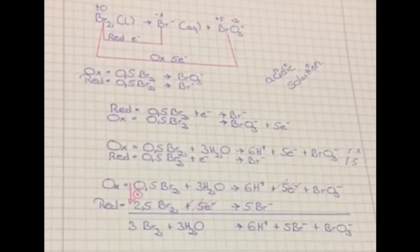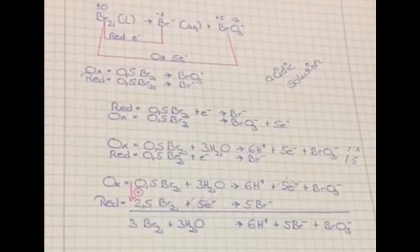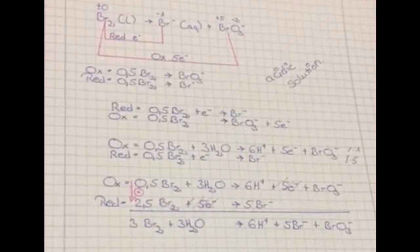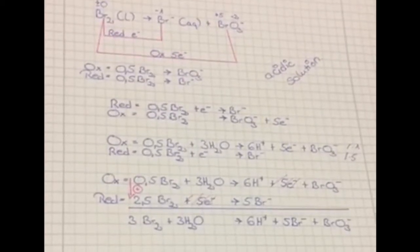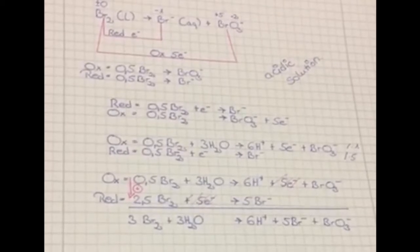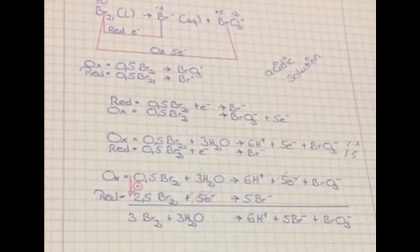The complete reaction called 3 elementary bromide, 3H2O, turn to 6H+, 5 negative bromide and BrO3-.